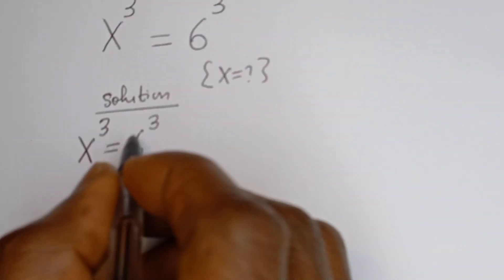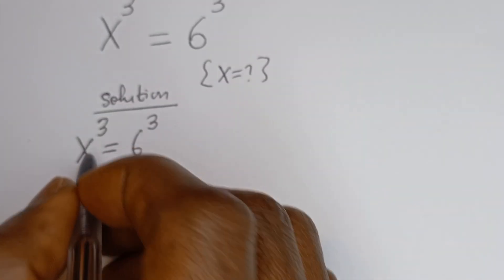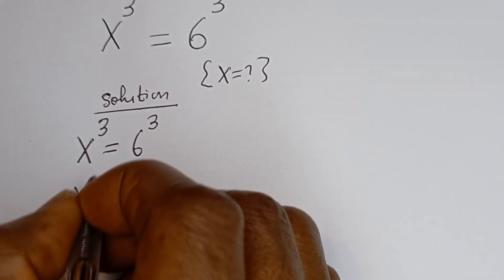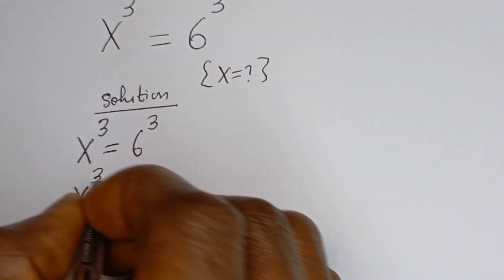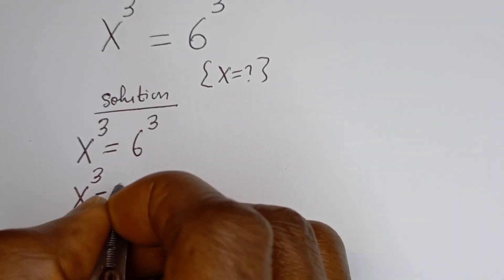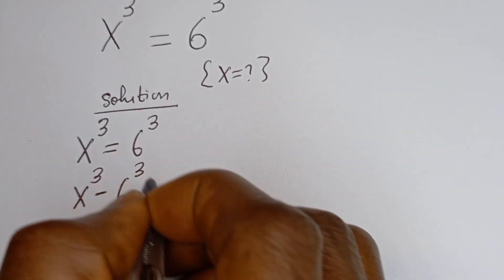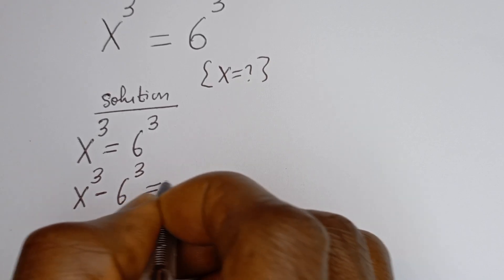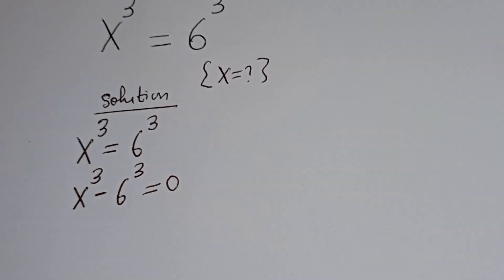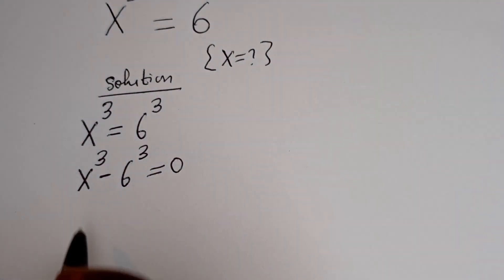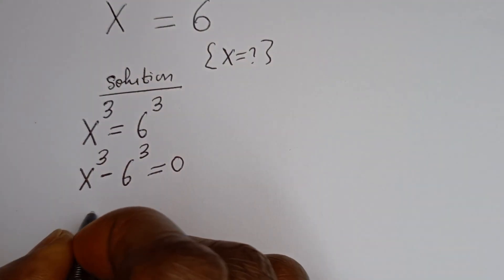Let's take 6 to the power of 3 to this side. We have x to the power of 3 minus 6 to the power of 3 is equal to 0.